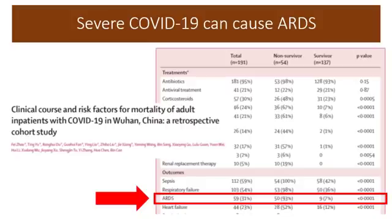Maybe that high proportion reflects the severity of disease among hospitalized patients. But crucially, if you look at the non-survivors — those who died — 93% of them had ARDS. That makes ARDS a really significant contributor to death in these patients. On the other hand, among survivors, only 7% had ARDS. So if you look at it the other way: if you have ARDS, your likelihood of survival is pretty low.